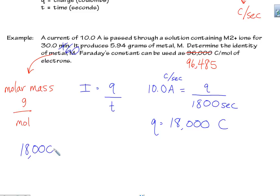18,000 coulombs. I could use this with Faraday's constant. It's 96,485 coulombs per one mole of electrons transferred. Well, if I look at this guy, and this is really like metal two plus, or plus two, that's the charge. Well, we're going to transfer two moles of electrons, right?